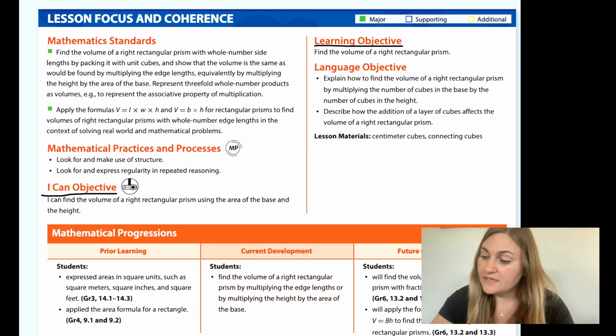The learning objective is to find the volume of a right rectangular prism. Prior learning from 3rd grade says students expressed areas in square units such as square meters, square inches, and square feet. From 4th grade, students applied the area formula for a rectangle.